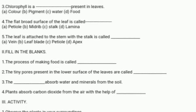Fill in the blanks. 1. The process of making food is called — Answer: photosynthesis. 2. The tiny pores in the lower surface of the leaves are called — Answer: stomata. 3. The — absorbs water and minerals from the soil. Answer: root. 4. Plants absorb carbon dioxide from the air with the help of — Answer: stomata. Thank you children.